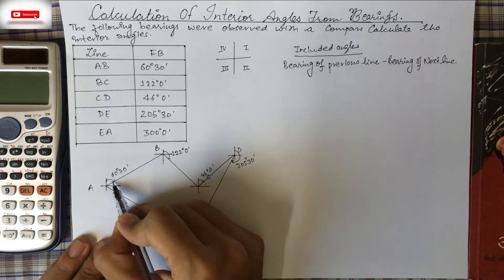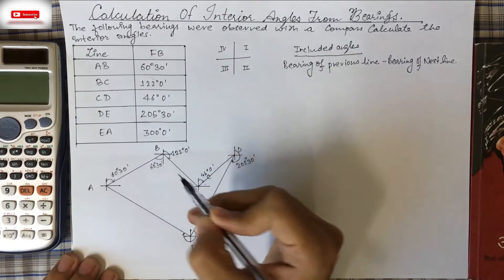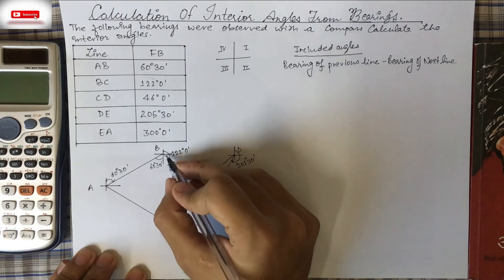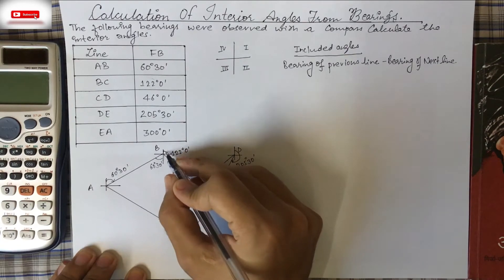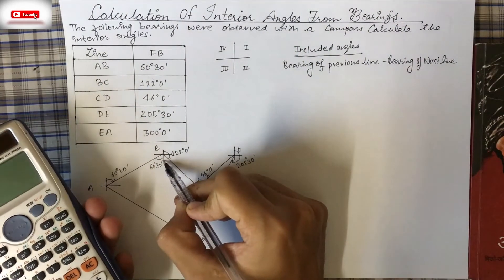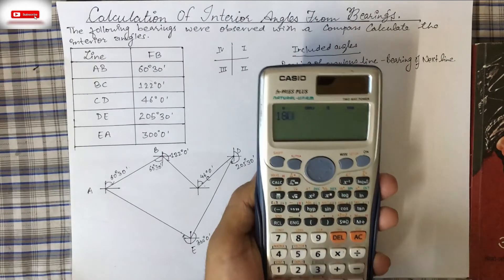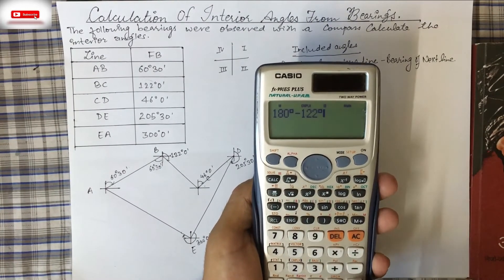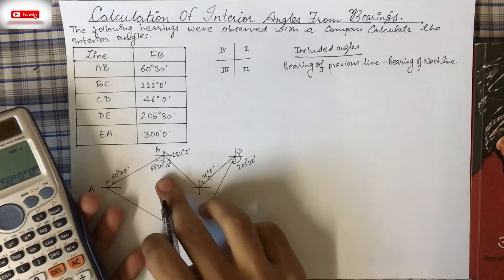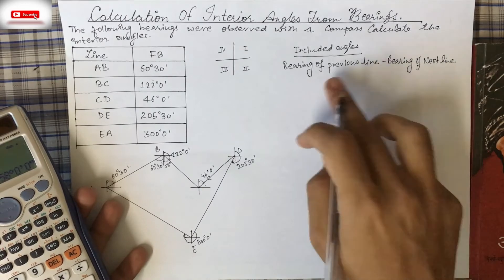From the figure, the bearing up to line AB is 60°30', so that angle component is also 60°30'. For angle B, the bearing of BC is 122°0', and since the straight line is 180°, we get 180° − 122° = 58°. Adding the two components gives interior angle B. This graphical method is quick for exams.